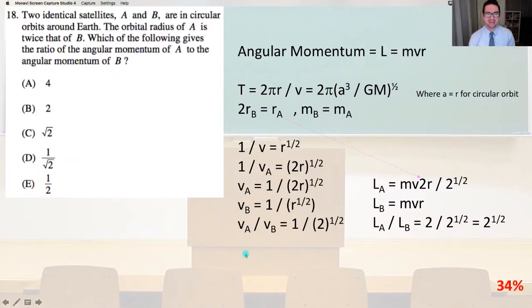Number 18. Two identical satellites, A and B, are in circular orbits around Earth. The orbital radius of A is twice that of B. Which of the following gives the ratio of the angular momentum of A to the angular momentum of B? So angular momentum equals L equals mvr, and t equals 2 pi r over v, and that also equals 2 pi times the square root of a cubed over gm. As the problem stated, 2 times the radius of B equals the radius of A, and the mass of B equals the mass of A.